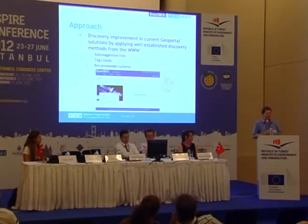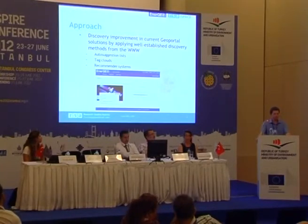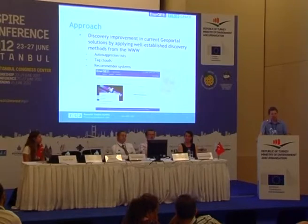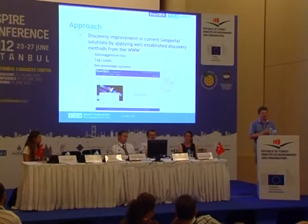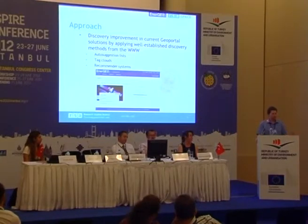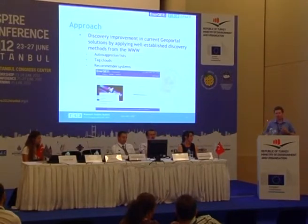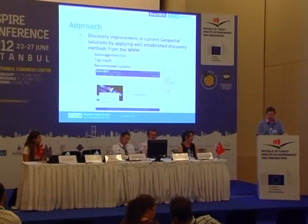What we did in the first step was to integrate auto-suggestion lists. For example, if you start typing within Google, you get recommendations and suggestions — like, would you like to search for 'energy' or 'energy management'? This was the first part we integrated. Another thing is the concept of tag clouds, which are representations of mostly used search tags. These were the first steps we tried to introduce in our GeoPortal. And finally, we thought it was time for an even bigger improvement: the recommender systems.